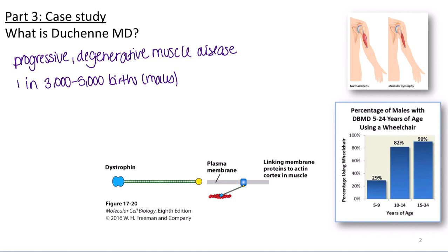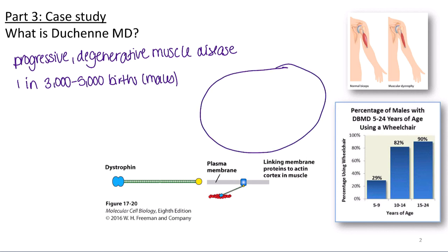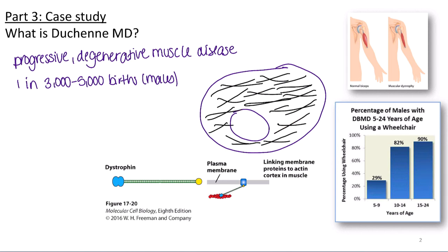Muscular dystrophy deals closely with the cytoskeleton and how muscles contract, which we covered earlier in the semester. I'm going to draw a cell here with a nucleus. When we think about the cytoskeleton, actin is found throughout the cell and is really important for movement. In muscles, actin and myosin cause muscle contraction. If we're having problems with muscles, that's going to relate to the cytoskeleton — and I'm focusing specifically on actin.